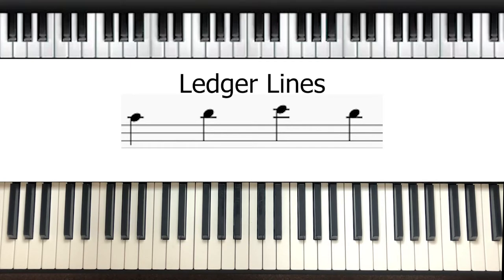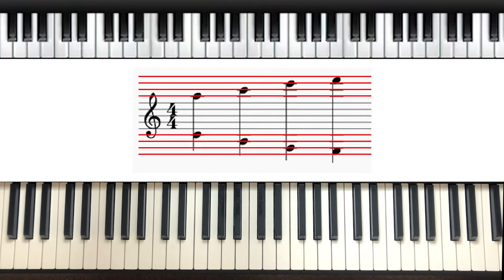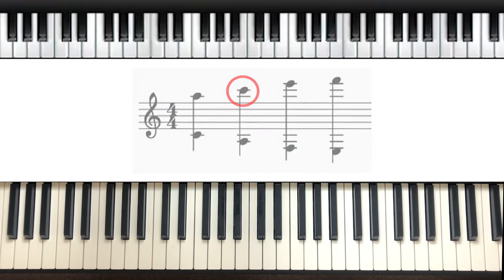These are called ledger lines, and they are just extensions of the staves and they can go above or below it. The reason they don't have the ledger lines as an official part of the stave is because it would get quite messy if you had something like 20 lines to read from. So instead we only use ledger lines to add in the notes that we are going to be playing.